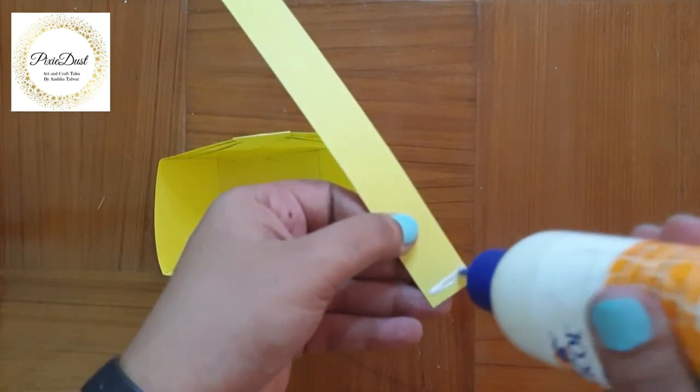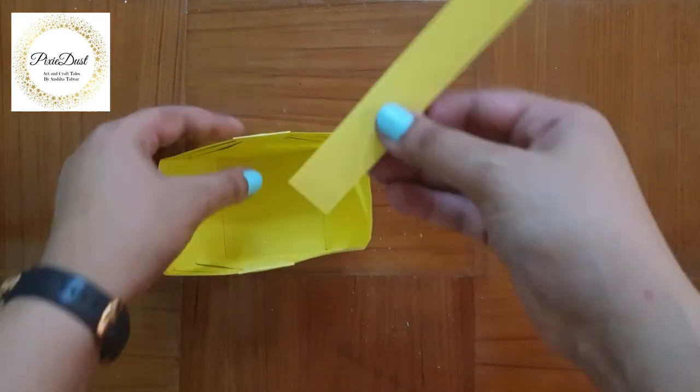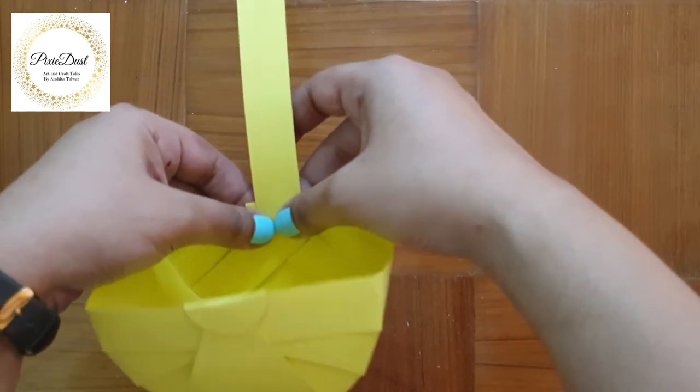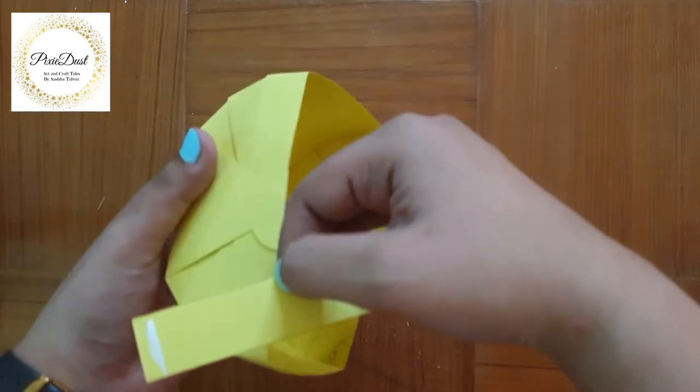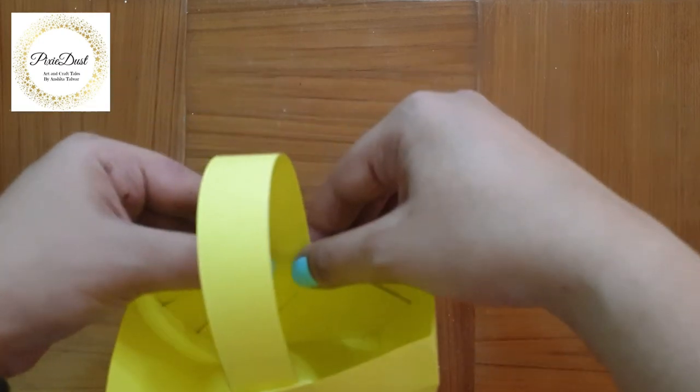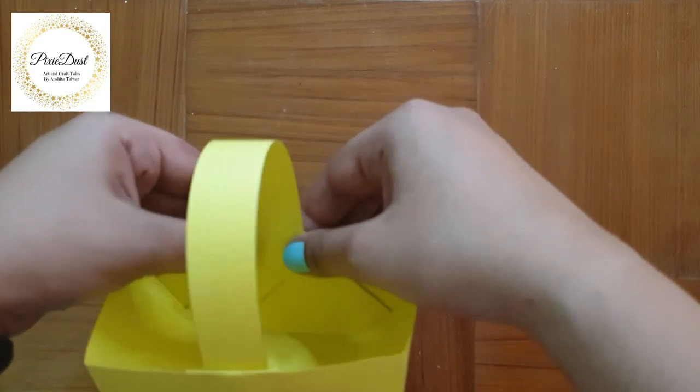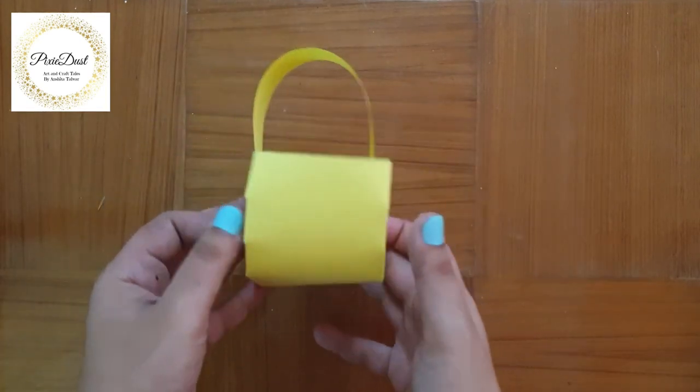Now I'm going to put some glue on the ends of the strip of paper and attach it to the folded circle falling inside the basket. So now my paper basket is ready.